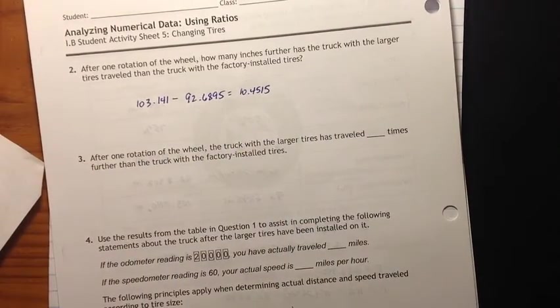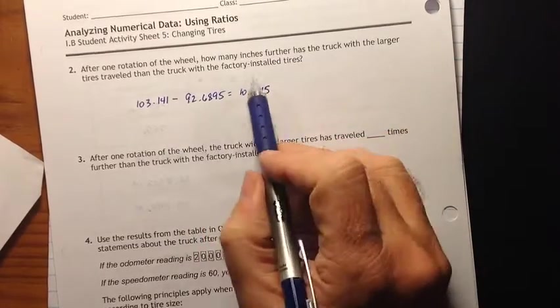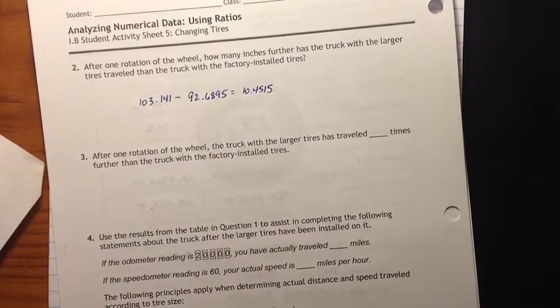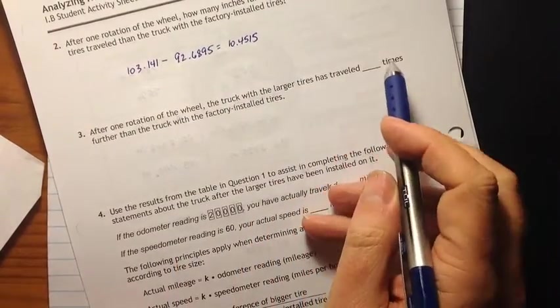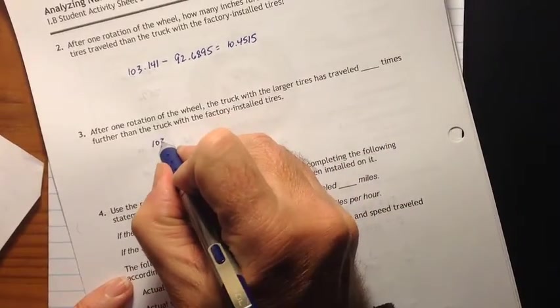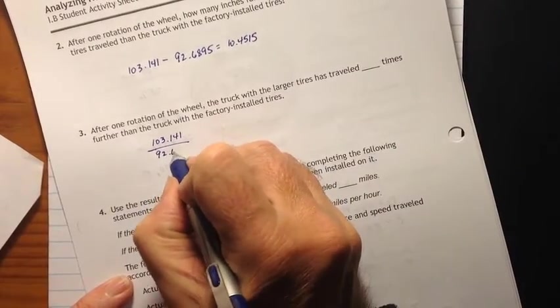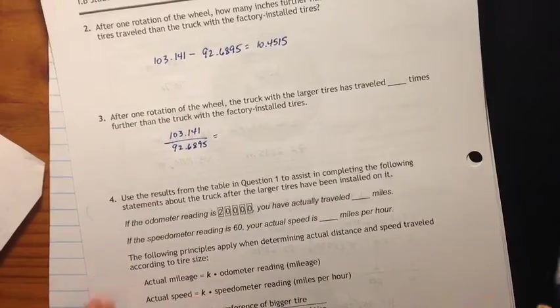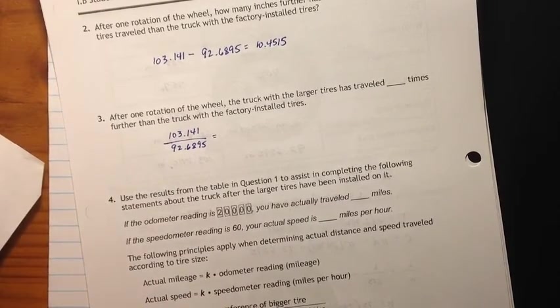So 103.141 minus 92.6895 is equal to 10.4515. So almost a foot. And not quite 12 inches, but pretty close. So every time those tires make one turn, you're going a foot further with the new tires rather than the factory installed tires. After one rotation of the wheel, the truck with the larger tires has traveled blank times further than the truck with the factory installed tires. So we're going to divide now. We're going to put the bigger one over the smaller one and say how many more times it has traveled.